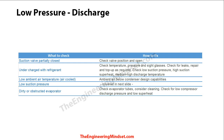Another cause of low discharge pressure is ambient air temperature being too low — air-cooled chillers cannot operate in those conditions, and you'll need to reprogram the system, checking with the manufacturer first. This can also result from a low suction pressure, which we'll cover next, and the most common cause on this list is a dirty or obstructed evaporator. Check the evaporator tubes and clean them to ensure maximum heat transfer.